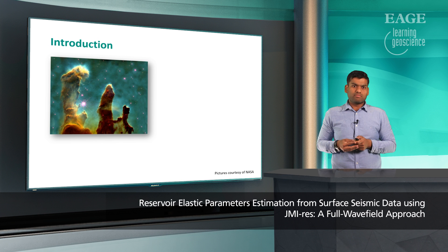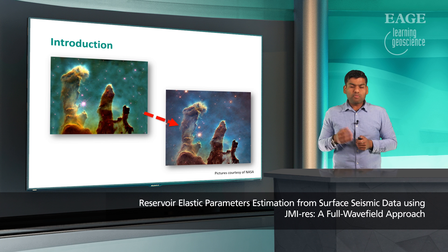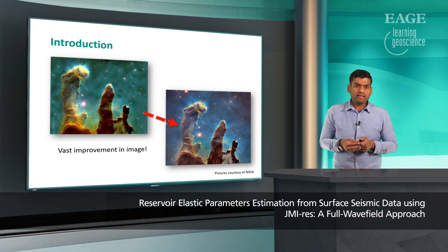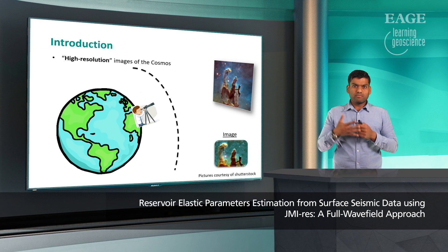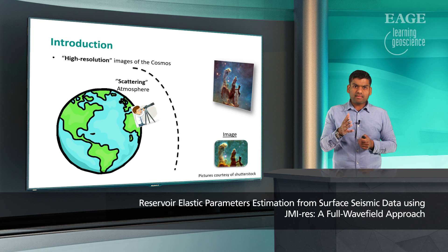Let me start by showing you some images of the cosmos. This is a popular image of a cosmic event showing the formation of new stars. Another image shows the same cosmic event, but with much higher resolution — a vast improvement. If you are at the earth's surface observing the cosmos, you get an image whose resolution suffers from the scattering atmosphere which lies between you and the cosmos, resulting in a low resolution image.